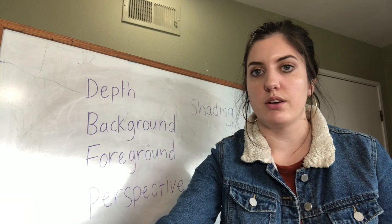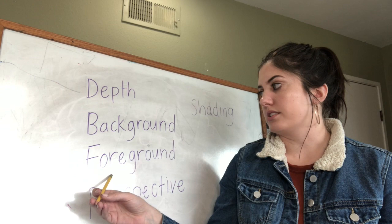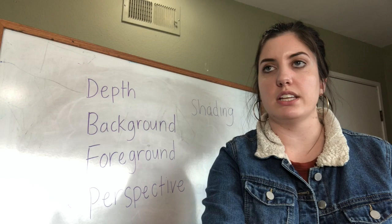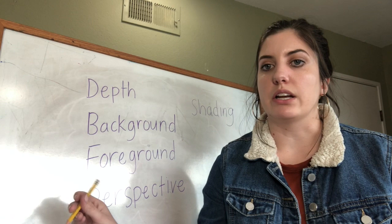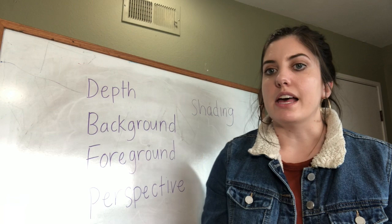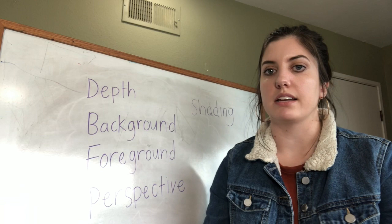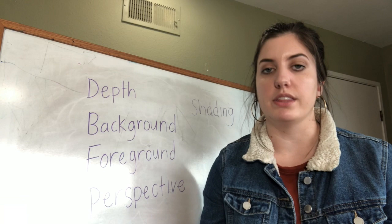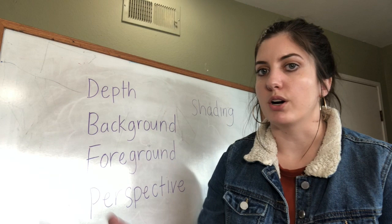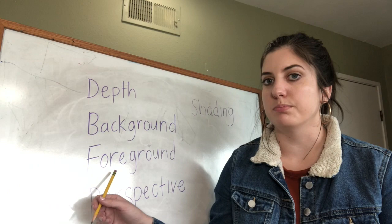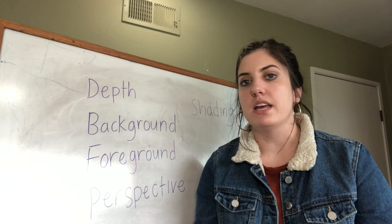That goes along with the next two words: background and foreground. Your background is usually at the top or middle portion of your page — things you draw a little bit smaller to make them look farther away. The foreground is usually at the bottom of your page, the closest thing to you, and you make things bigger in the foreground because things closer to you look bigger in real life.